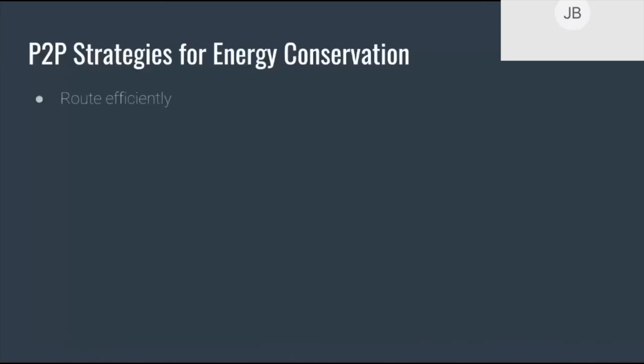So, what are those strategies? I'm going to take them from most technical to least technical. Route efficiently — this has actually come up in other talks today because it does apply to client-server to a degree, although it just has a bigger impact in a peer-to-peer system. Creating efficient routes for a protocol is a pretty high-level ask because it applies to the design of the protocols themselves. But maybe you are the person choosing the tech to build your app on, and if you are, I recommend adding efficient routing to your list of things to consider when evaluating the various protocols you could use.